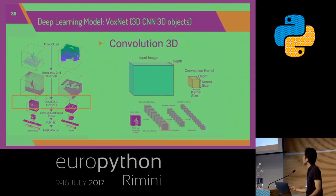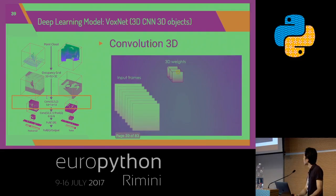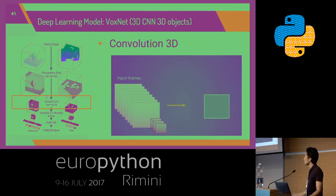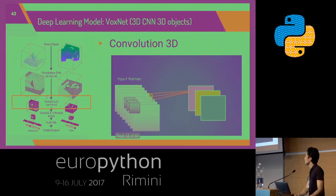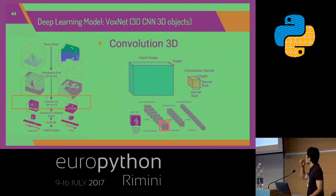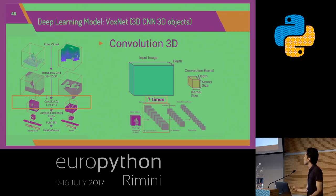For the 3D case: the input image and a 3D kernel are provided. The 3D kernel moves across the image, mapping all positions and producing a convolution feature. Then it moves inward and provides another convolution feature. The action is repeated, producing the first convolution feature layer. In this figure, the action is repeated 7 times.